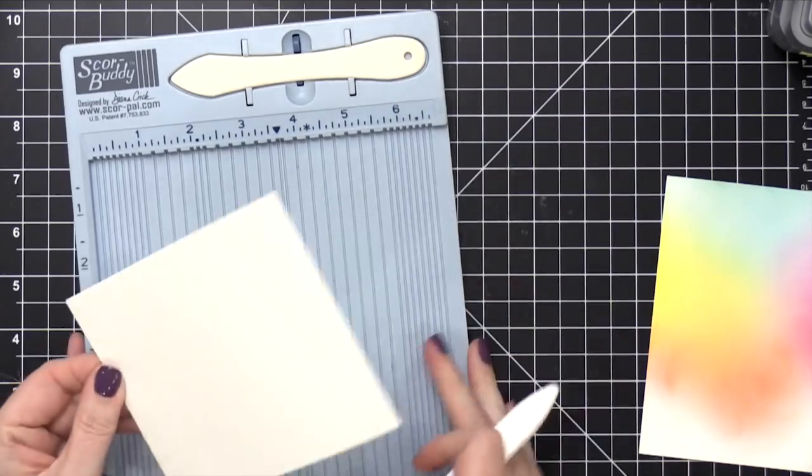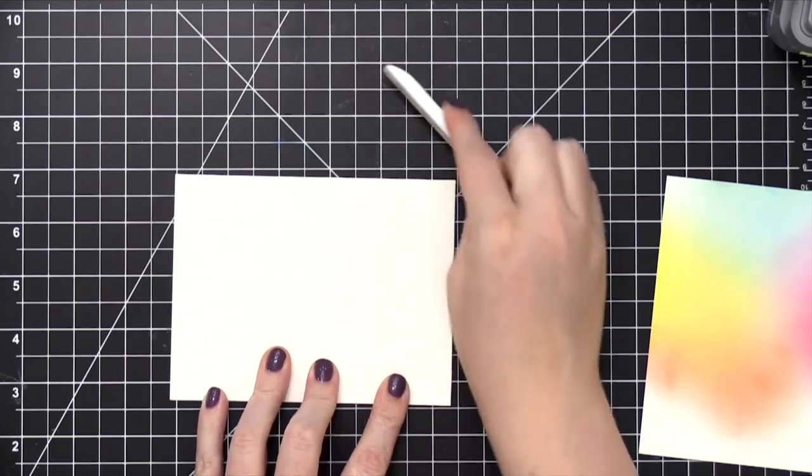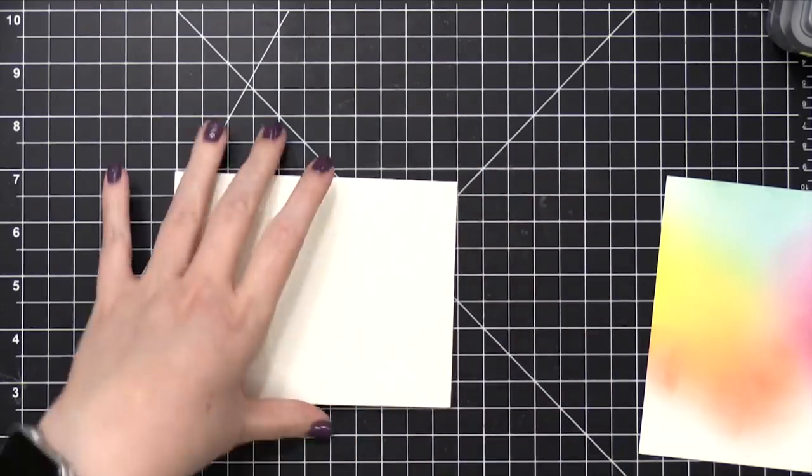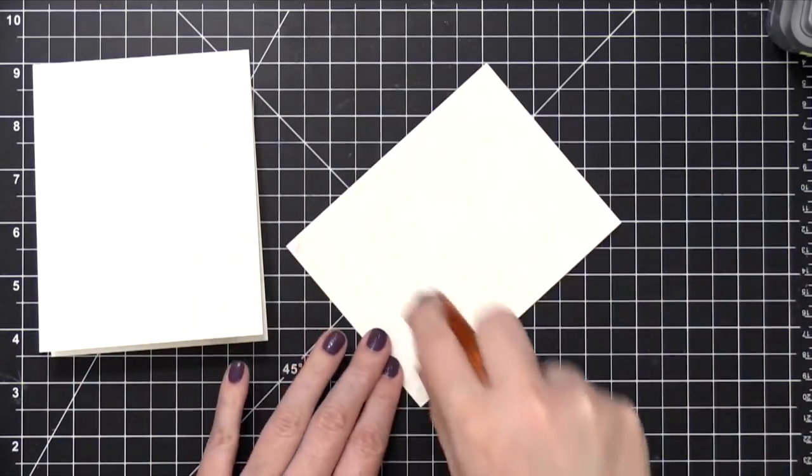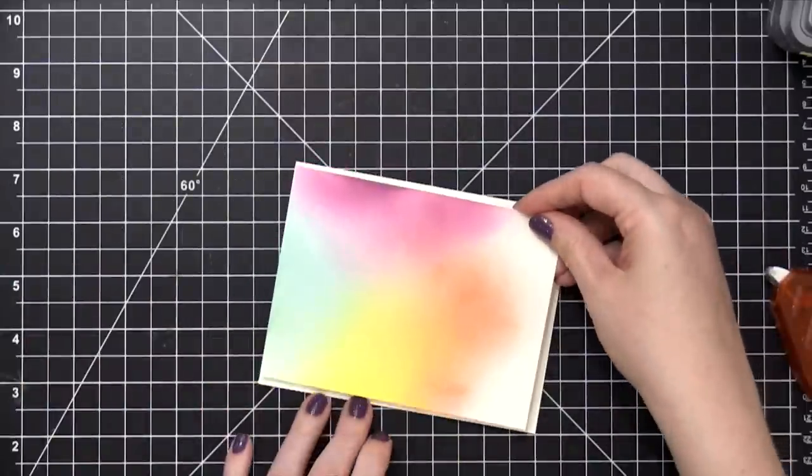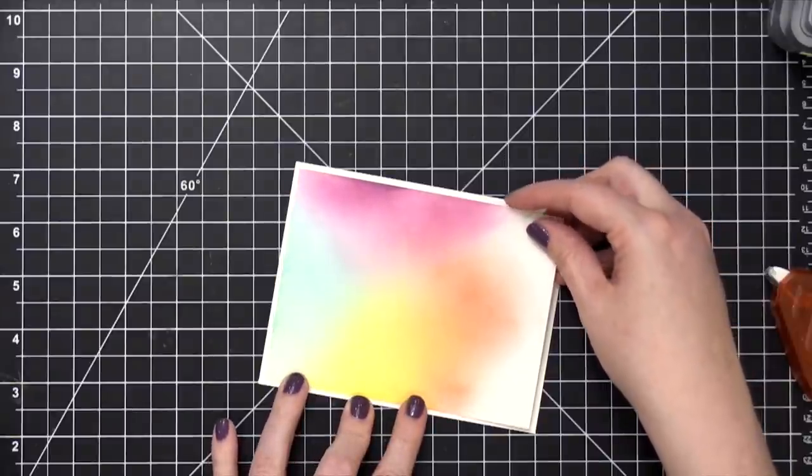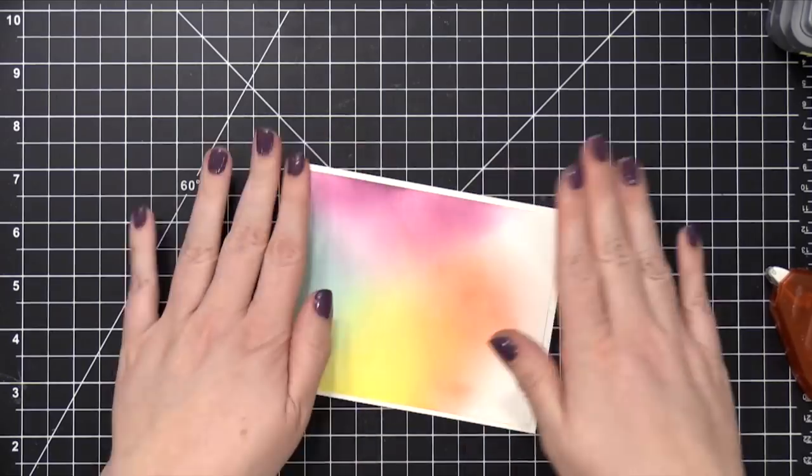So I'm making my card base out of that same cardstock, but it's a different weight. This is the 110 pound, and I scored it at five and a half to create a top-folding card. I then put some tape runner adhesive—this is Tombow Extreme Adhesive—on the back of the blended piece, and then directly onto the front of the card.